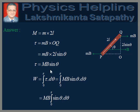One can easily understand that the value of torque depends on the value of theta. Therefore, different amounts of torque will be acting at different orientations of the magnet. Therefore, the total work done in rotating through 0 to pi, that is 180 degrees, will be different at different orientations. Therefore, the total work can be obtained by integration only. Therefore, W is equal to the integral of dW, and dW is nothing but tau into d theta, integrated between limits theta equal to 0 to theta equal to pi.